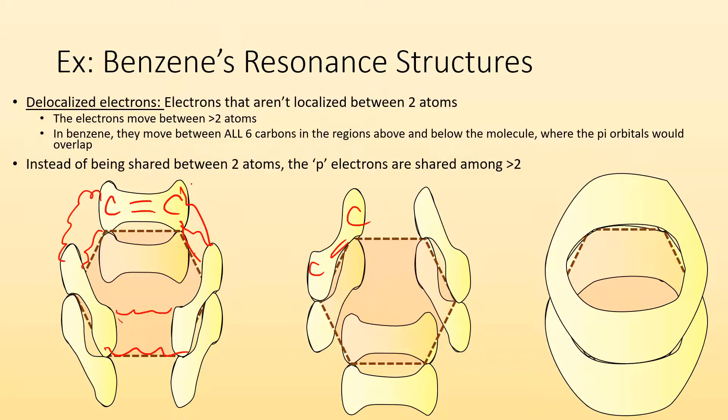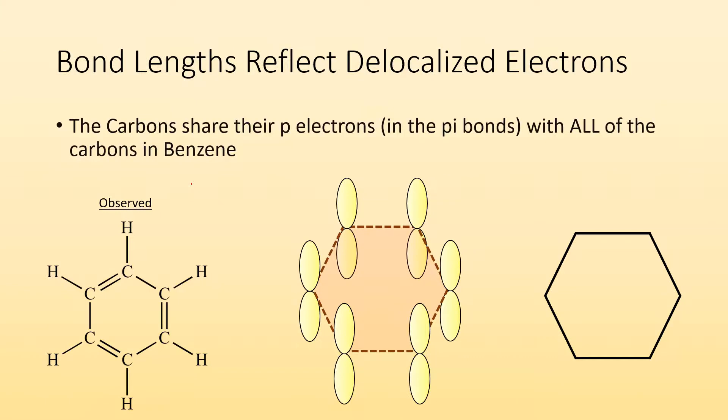Instead of being shared between two atoms, the p electrons are shared amongst all six in benzene. Bond lengths reflect the delocalized electrons. Like I was saying, the carbons share their p electrons in the pi bonds with all of the carbons in benzene.